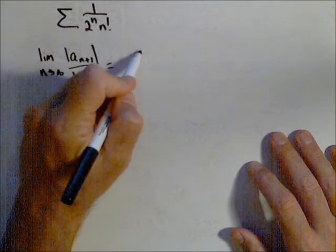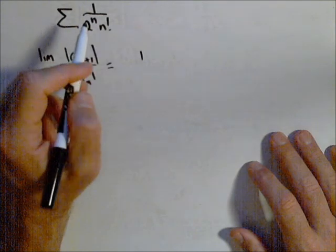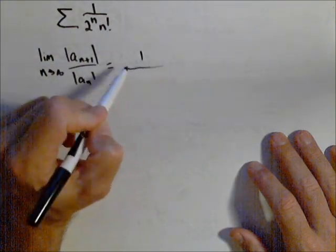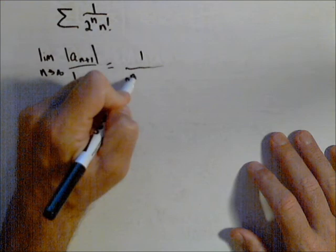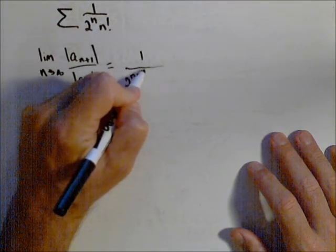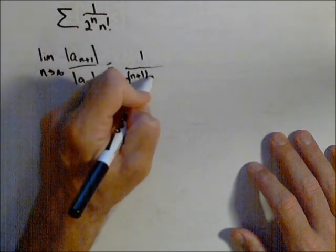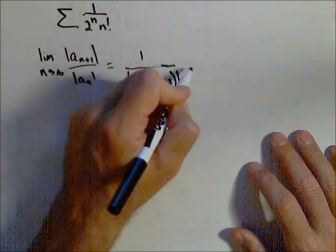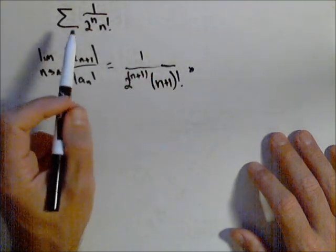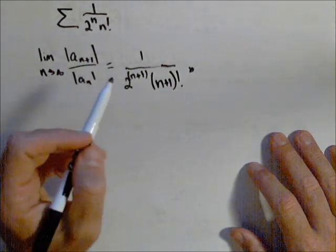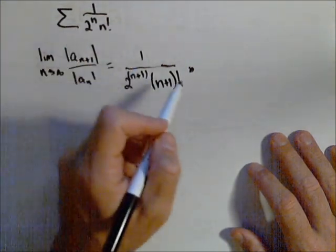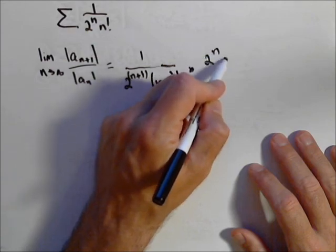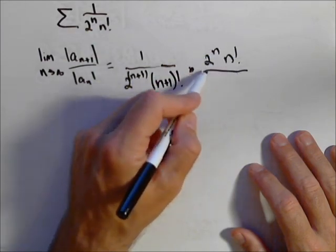a sub n plus one is our sequence with n plus ones substituted in for the n's. So two to the n plus one, all in the exponent, times n plus one factorial. To save time, instead of dividing by a sub n, I multiply by the reciprocal. So I'm going to multiply by two to the n times n factorial over one.